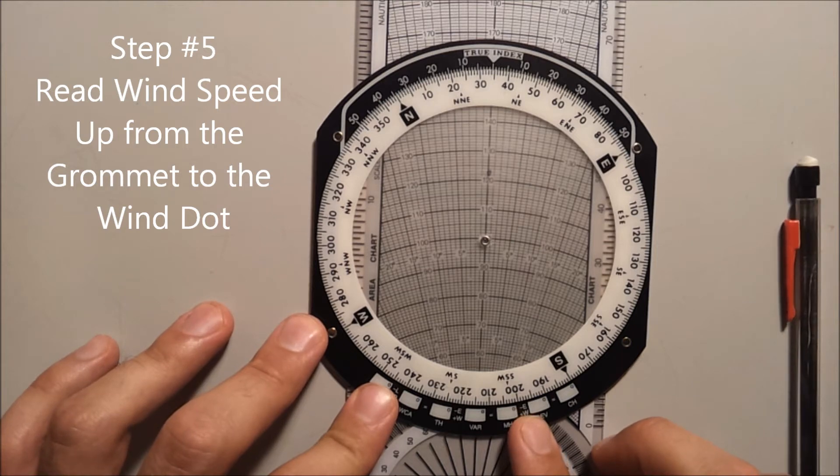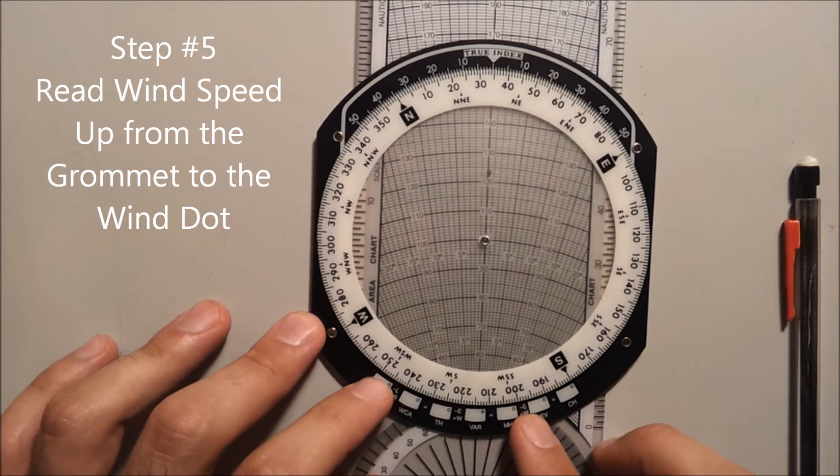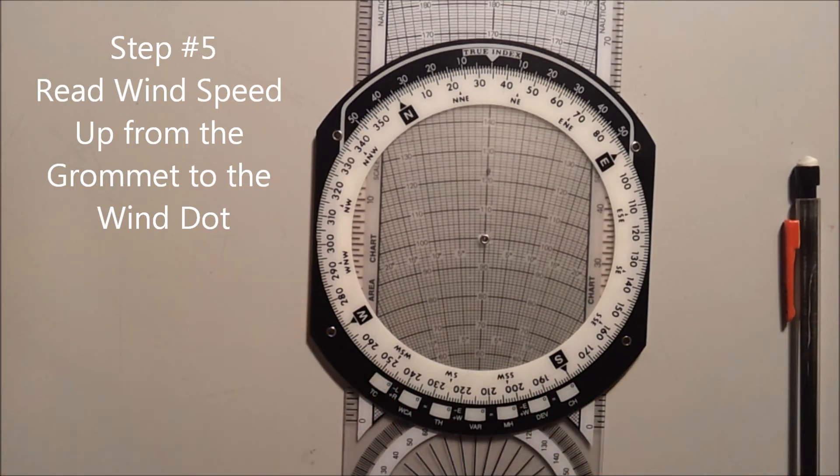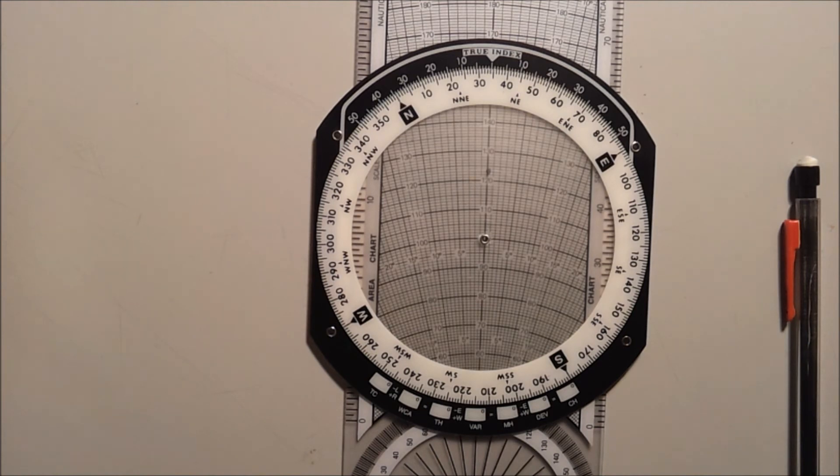Sliding the grommet to a whole number, you can read your wind speed beneath your mark. In this case, 23 knots. Thank you for watching.